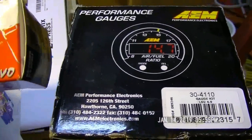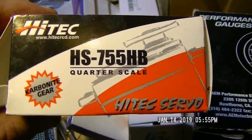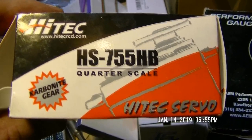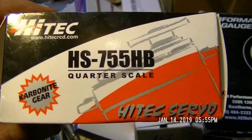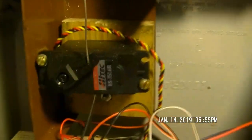The next thing you have to have is a servo motor to run the linkage for your carburetor and this is a high-tech servo. It is an HS-755HB and that is that guy right there.